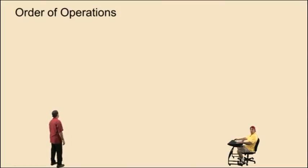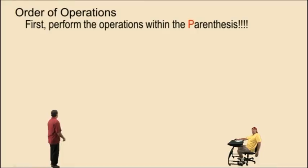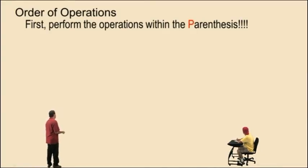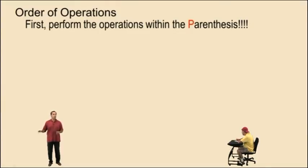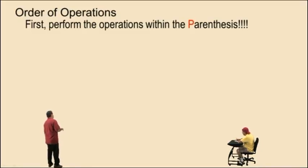Order of operations. First, when we're simplifying an expression, we perform the operations within the parentheses. Now, the first category in order of operations refers to parentheses. But there are actually other types of grouping symbols that fall in this category. In this course, we're only talking about parentheses up to this point. We're going to disregard the other types of grouping symbols — we'll get to those later. So for now, the first thing you do is perform the operations within the parentheses.